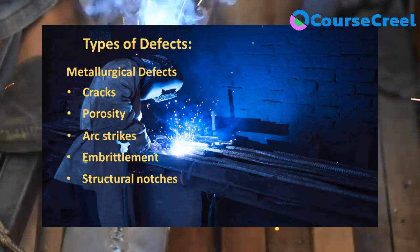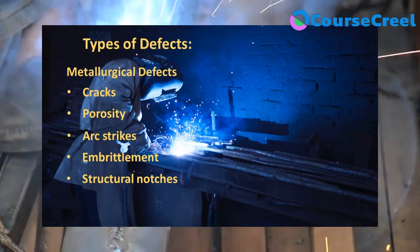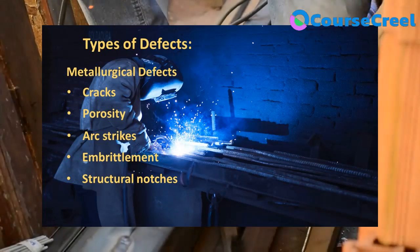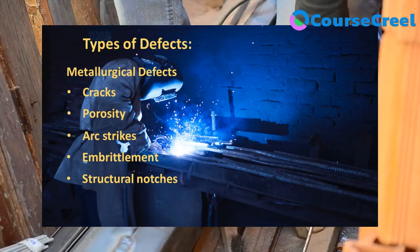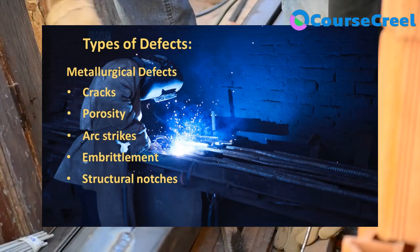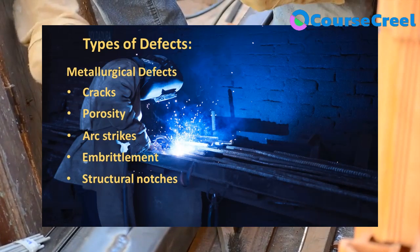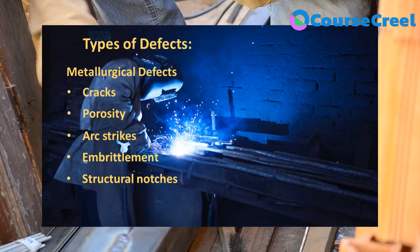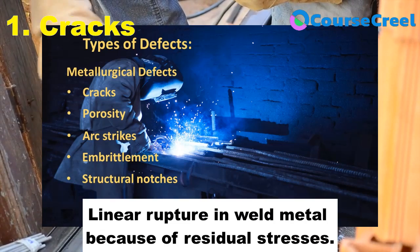That covers defects involving inadequate bonding. The next category is metallurgical defects. In metallurgical defects, the defects we consider are cracks, porosity, arc strike, embrittlement, structural notches, and others. We will discuss each of these types of metallurgical defects one by one.